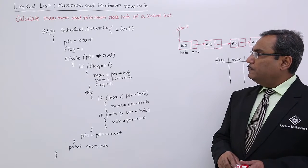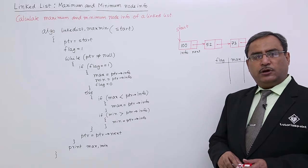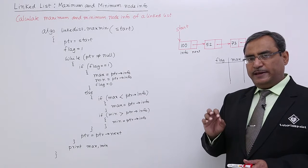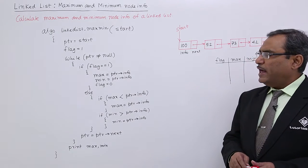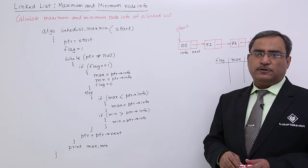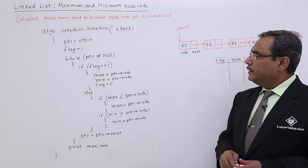Now ptr is equal to start, so ptr has got initialized with the address which has been kept in start. Flag is equal to 1—what is the purpose of flag we shall discuss.